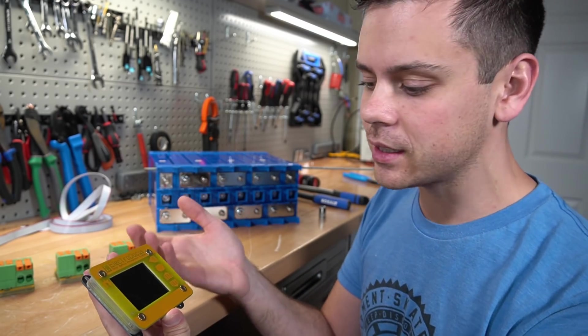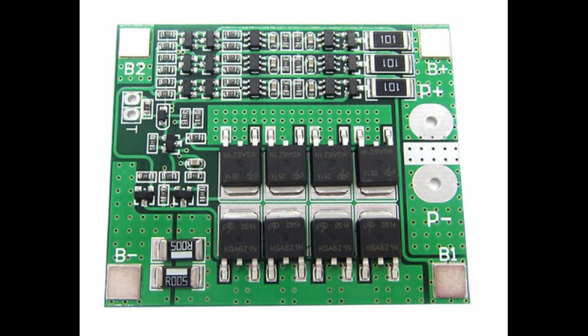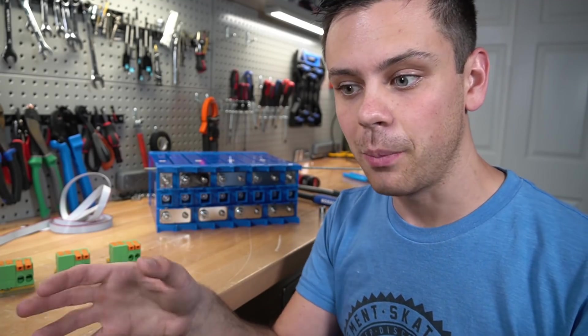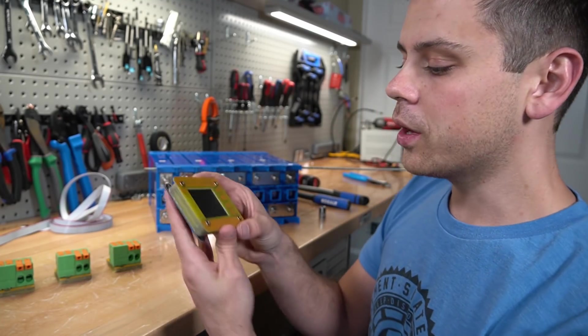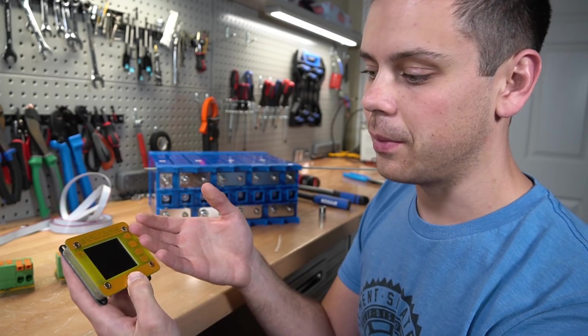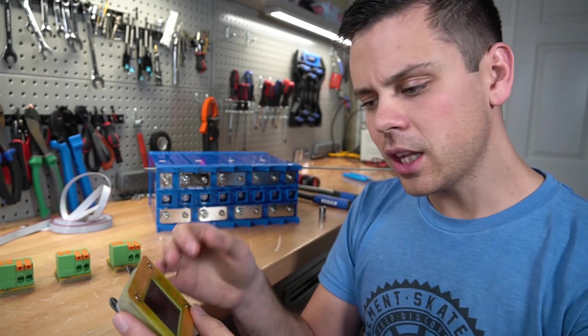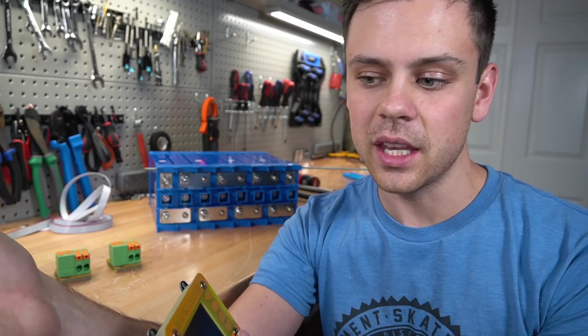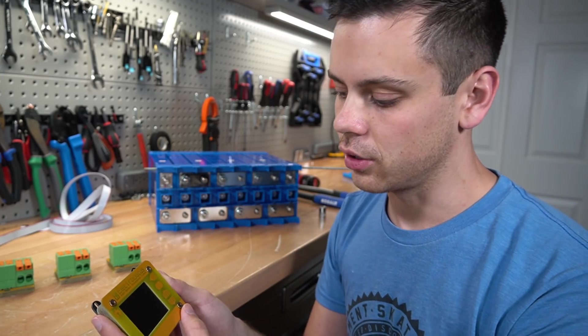Typically with a BMS system, you will use a large bank of parallel FETs as an on and off switch for high and low voltage disconnect, and you'll have individual cell monitoring to control that. With this, this has individual cell monitoring and management, but it uses communication wires instead to turn on and off the inverter or the solar charge controller.